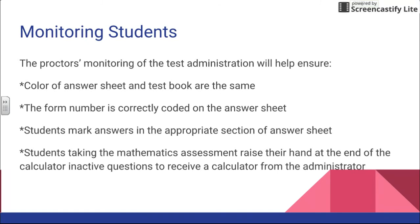Students need to mark answers in the appropriate section of their answer sheet. If you happen to walk by and notice that a student is reading a passage marked 16 but has skipped down to question 22, don't say anything to them directly. Go back and let the administrator know, 'I think they're off on alignment,' and the administrator can go and check.